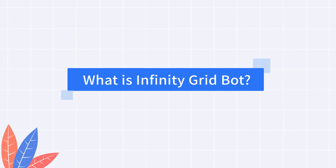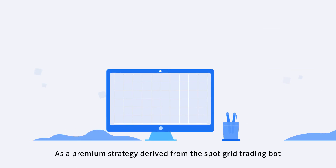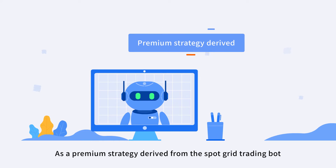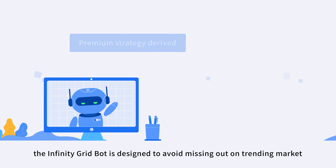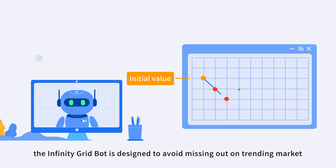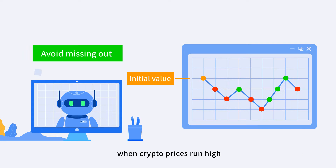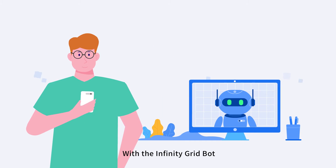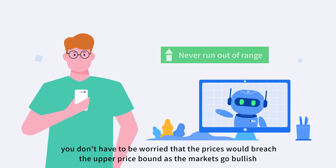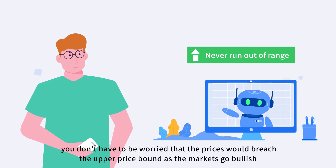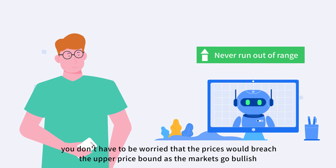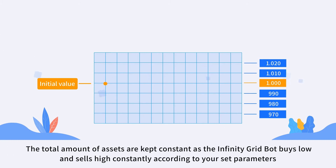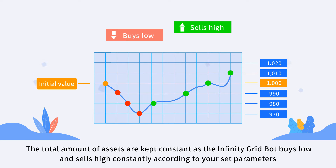What is Infinity Grid Bot? As a premium strategy derived from the Spot Grid Trading Bot, the Infinity Grid Bot is designed to avoid missing out on trending market when crypto prices run high. With the Infinity Grid Bot, you don't have to worry that prices would breach the upper price bound as the markets go bullish. The total amount of assets are kept constant as the Infinity Grid Bot buys low and sells high constantly according to your set parameters.